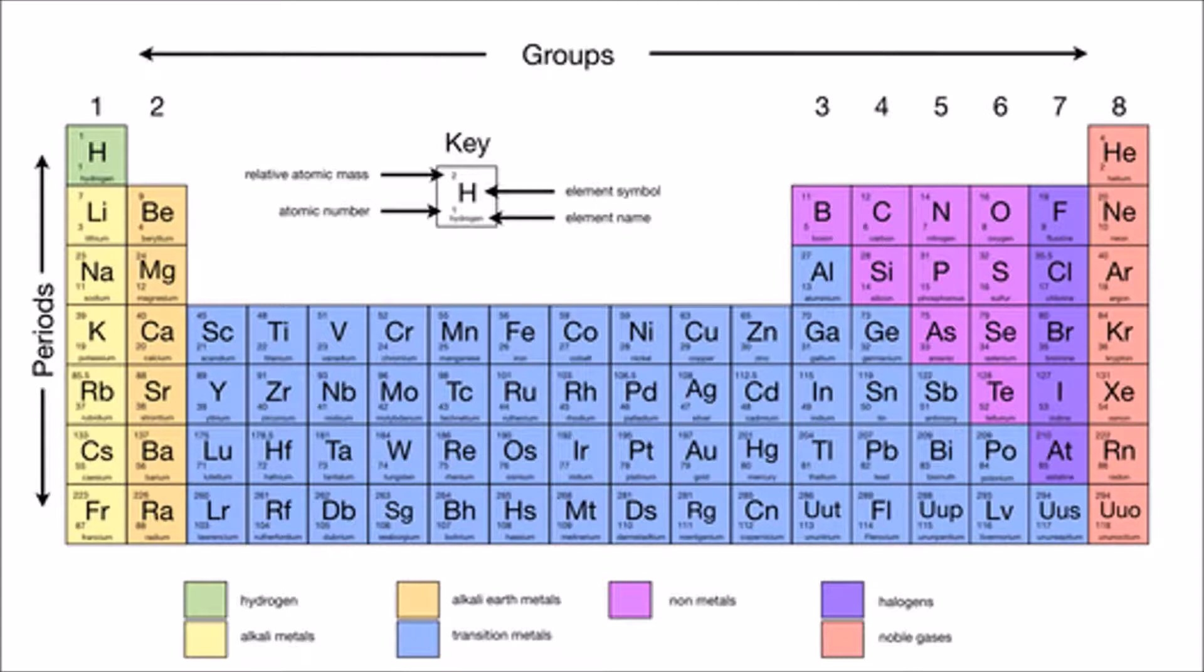Group 8 can also sometimes be called group 0. So another thing to think about is fluorine, for instance, has 7 electrons inside the shell and so does chlorine.